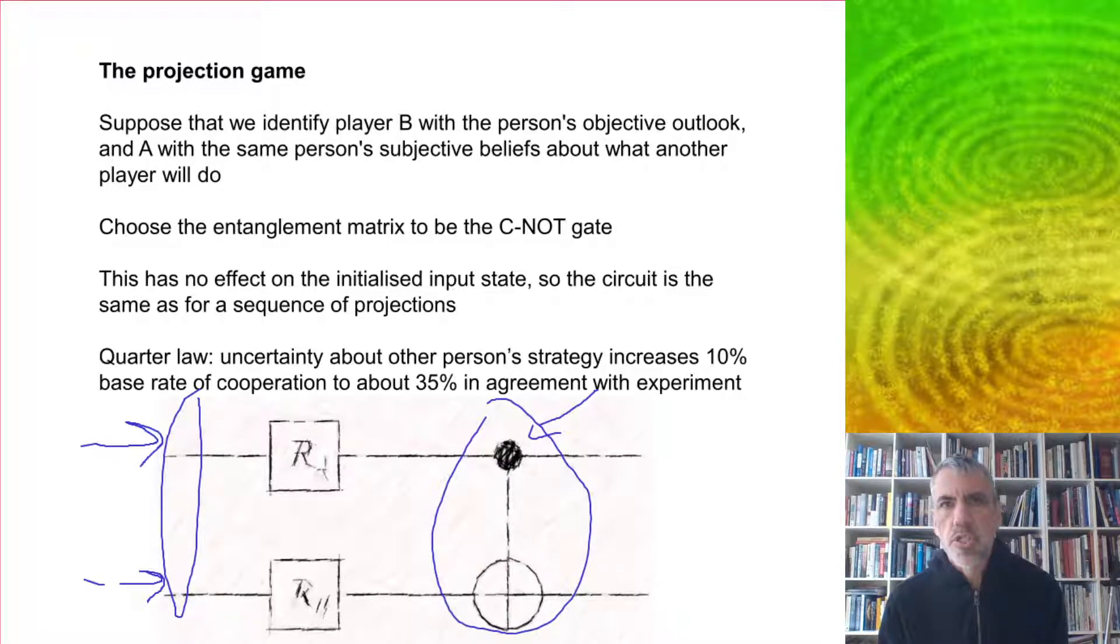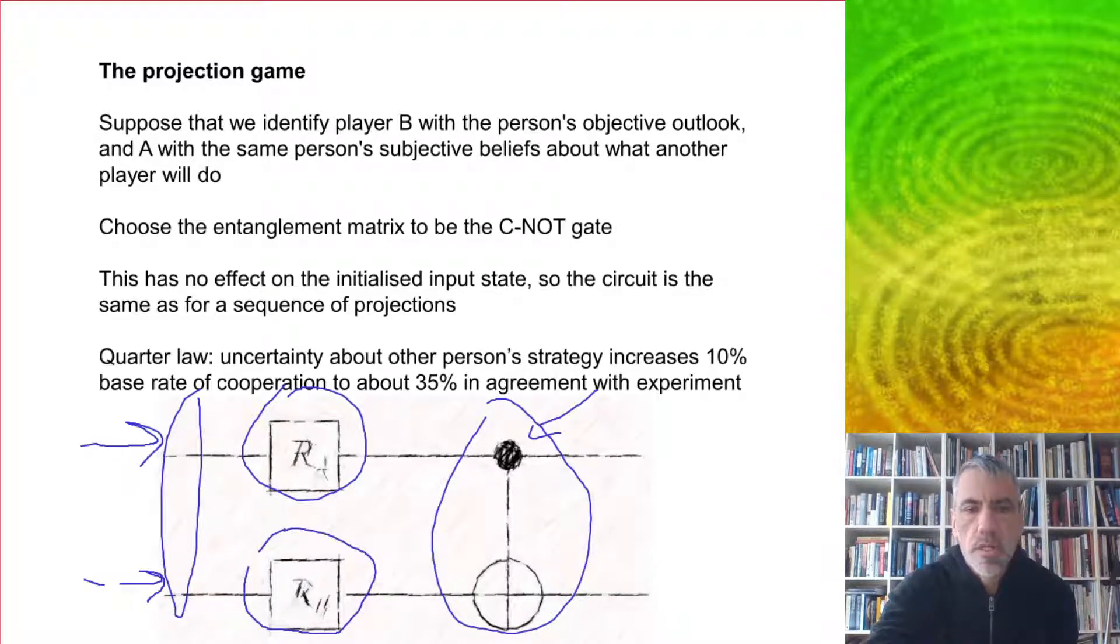We have some subjective factors represented by this gate here acting on the top qubit and some objective factors here on the bottom, and then we can apply the quarter law to this.